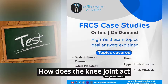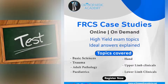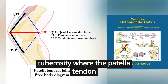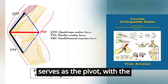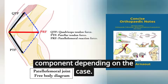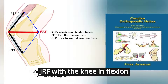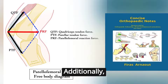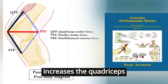How does the knee joint act as a class 3 lever and what is the significance of this in orthopaedics? The knee joint acts as a class 3 lever, where the effort is at the tibial tuberosity where the patellar tendon inserts. The knee joint itself serves as the pivot, with the femur and tibia acting as either the fixed or mobile component depending on the case. This is significant because there is an increased JRF with the knee in flexion due to the increased pull of the quadriceps muscles. Additionally, patellectomy reduces the quadriceps moment arm and increases the quadriceps force.